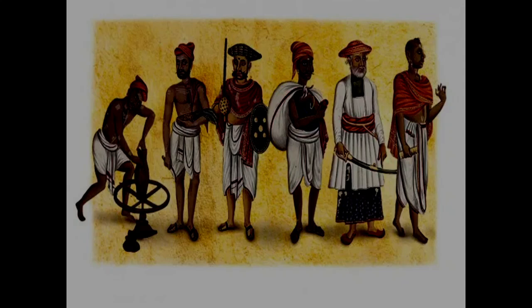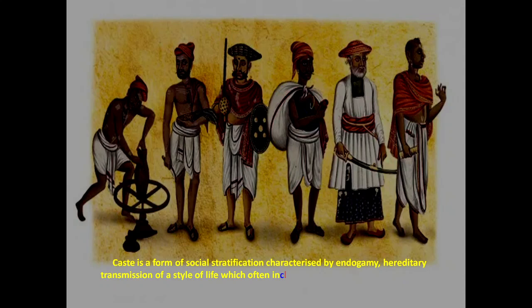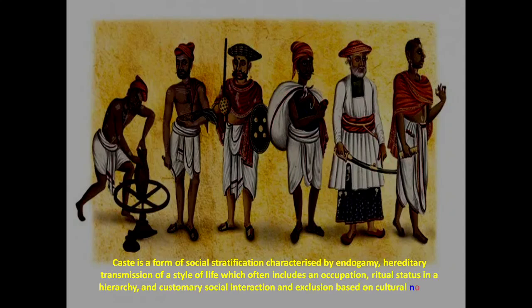What is meant by caste? Caste is a form of social stratification characterized by endogamy — marriage within the family — hereditary transmission of an occupation, ritual status in a hierarchy, and customary social interaction based on cultural notions of purity and pollution.